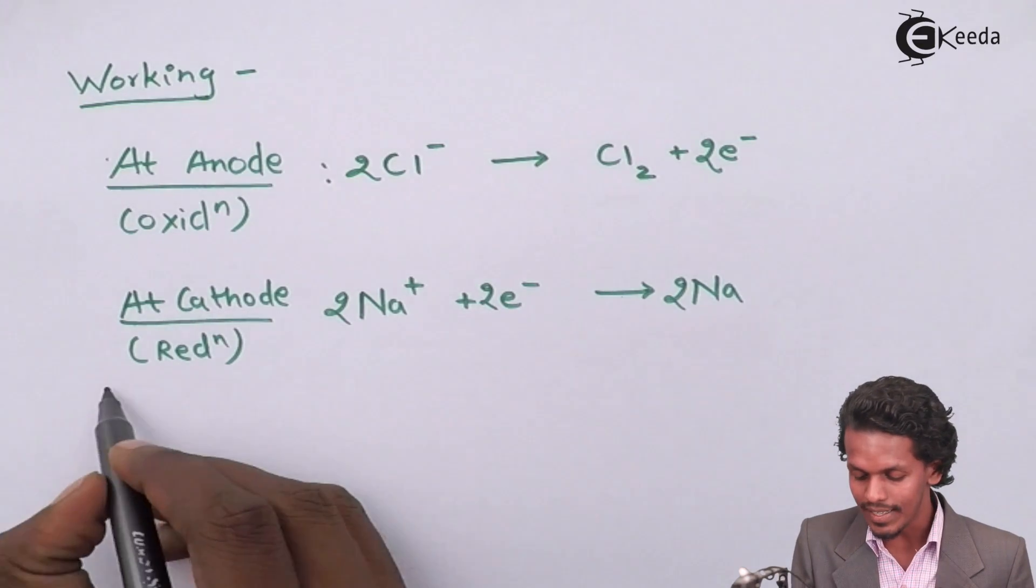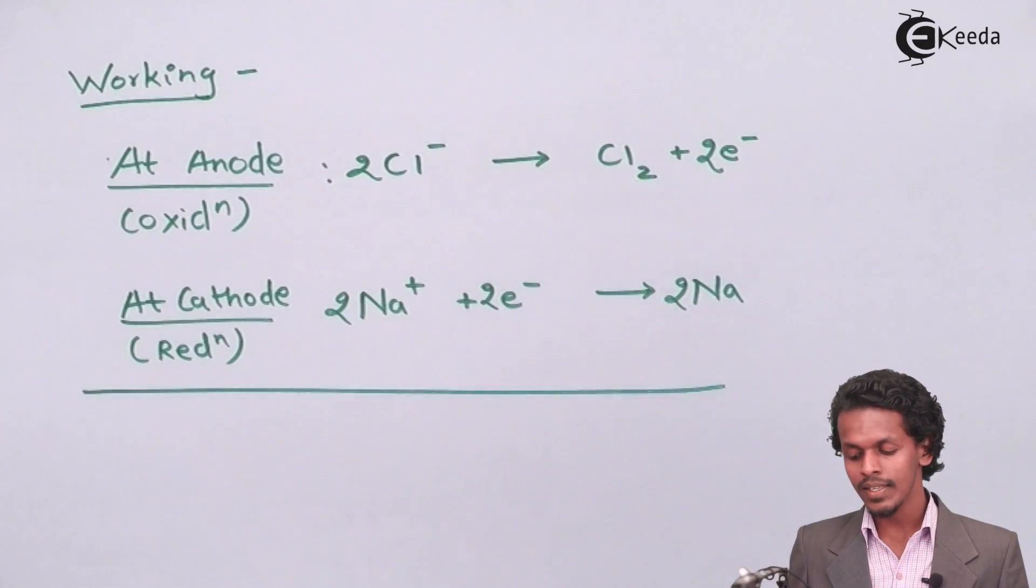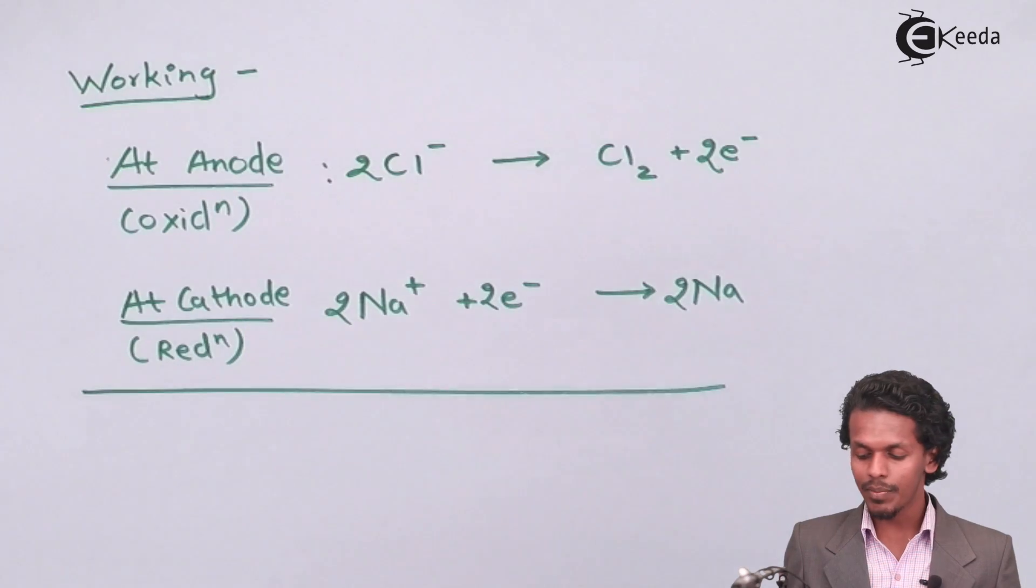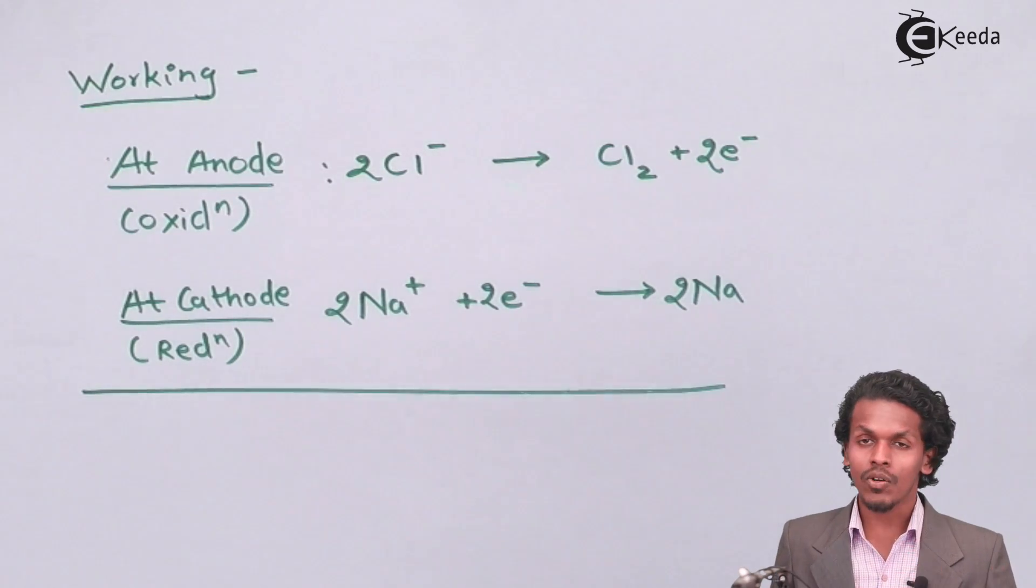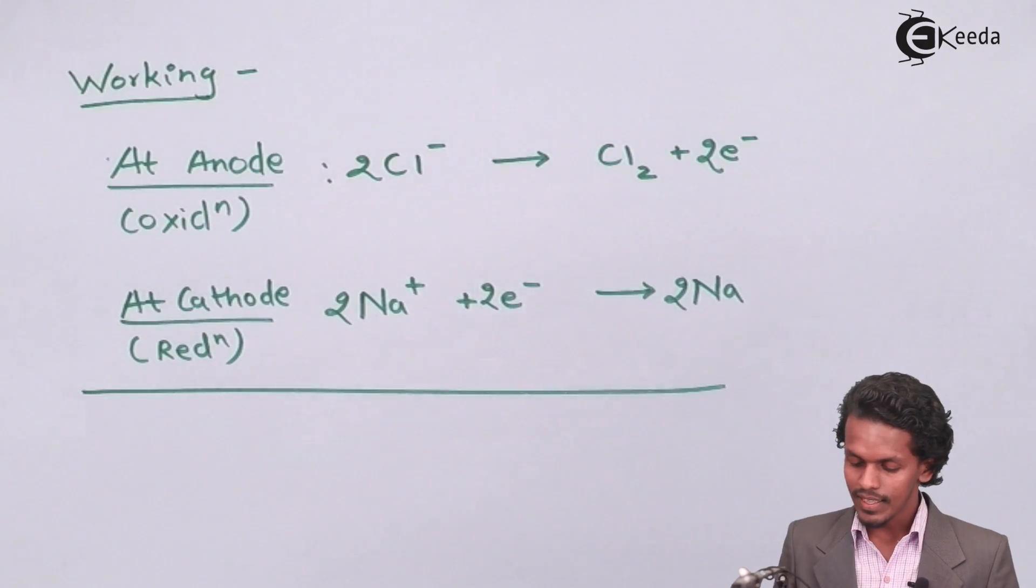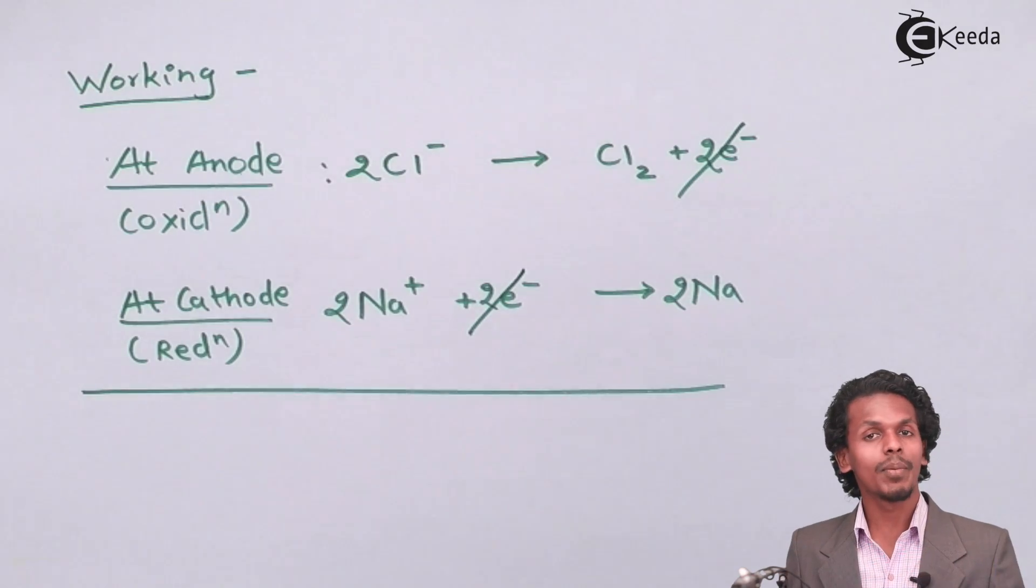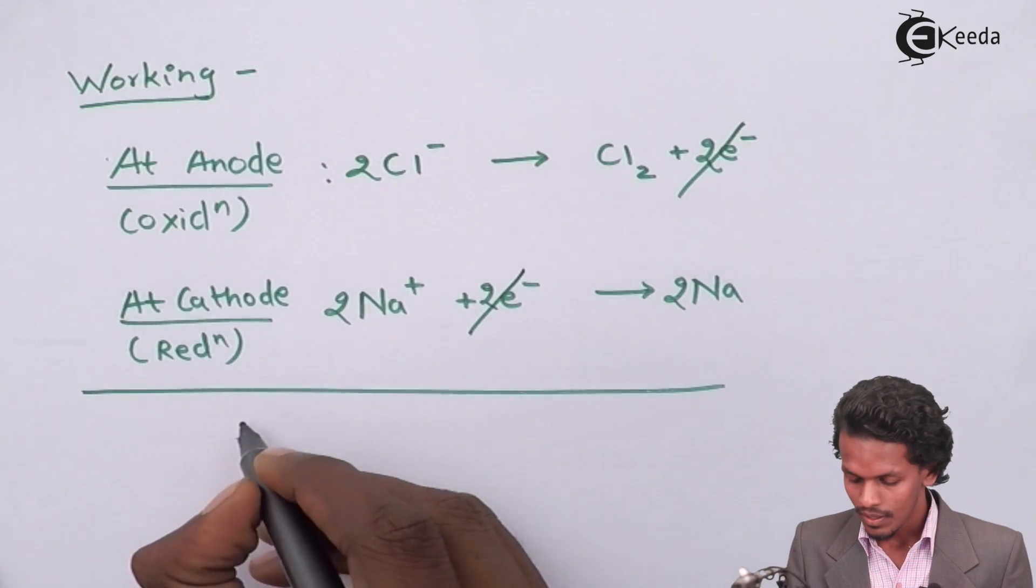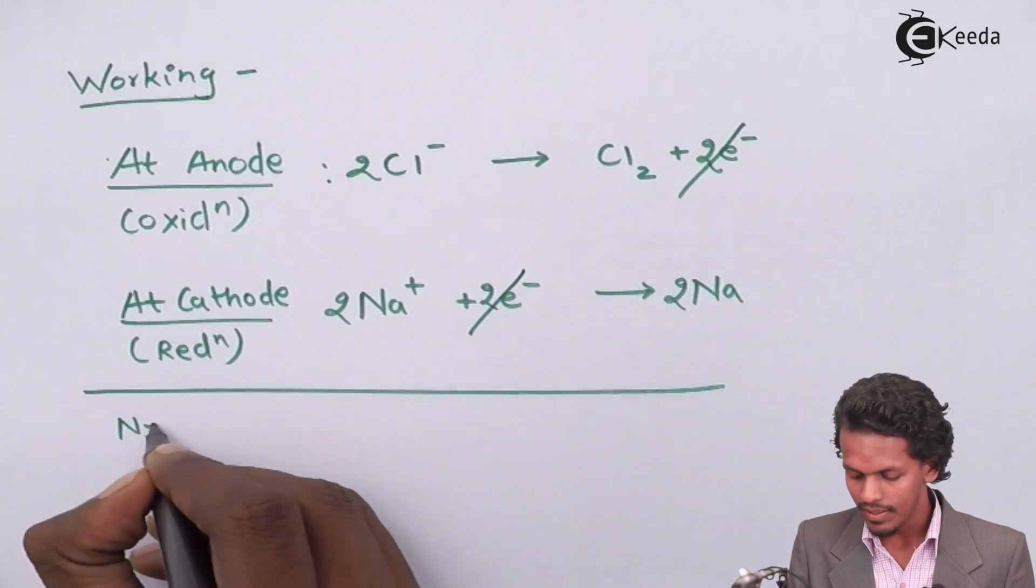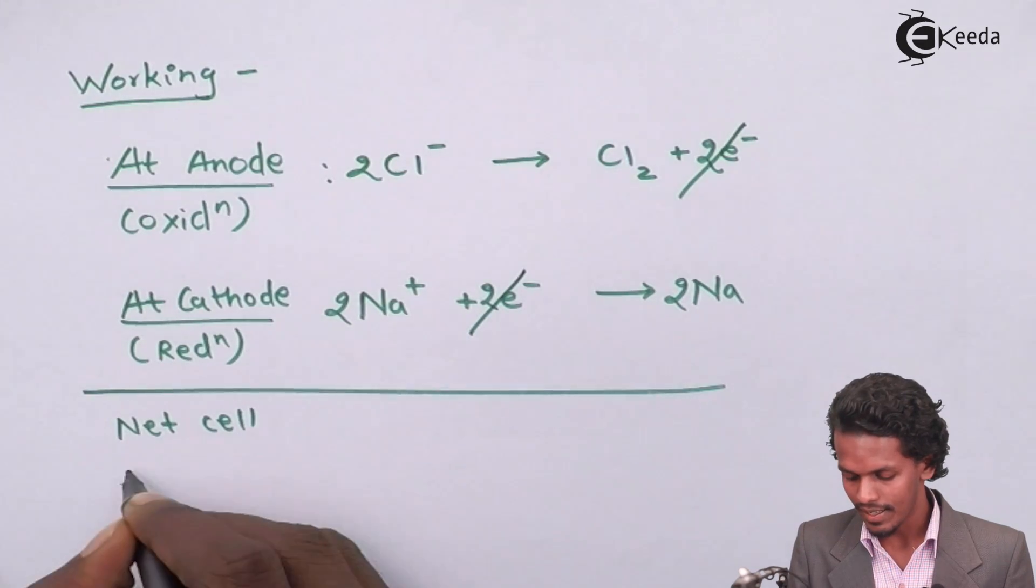So this is where the electrolytic cell of molten NaCl, but this is not done yet. We have to calculate the net cell reaction. How can we calculate the net cell reaction? By eliminating the electrons that are present on left side and right-hand side. So in this case, this two electrons and this two electrons will cancel out.